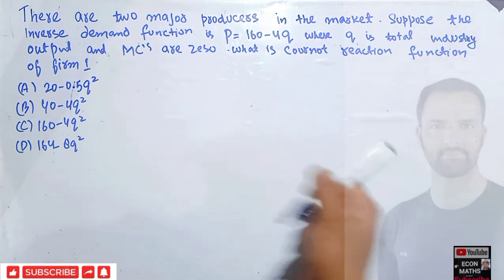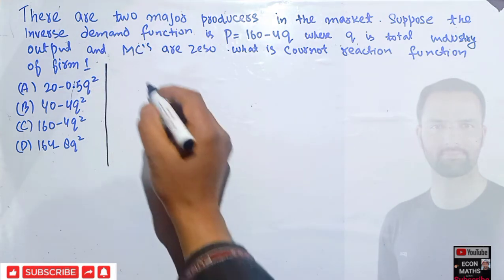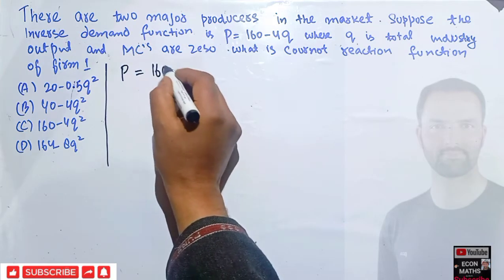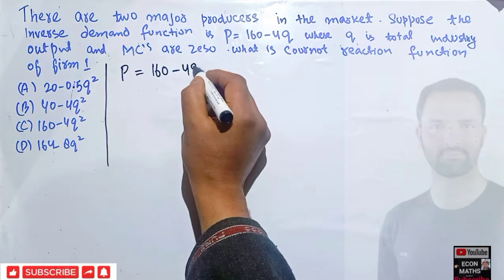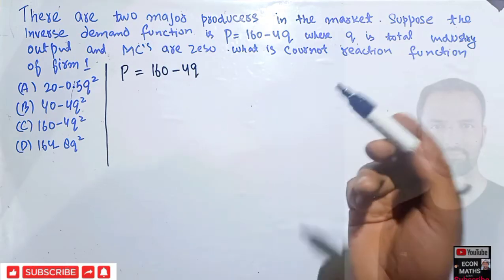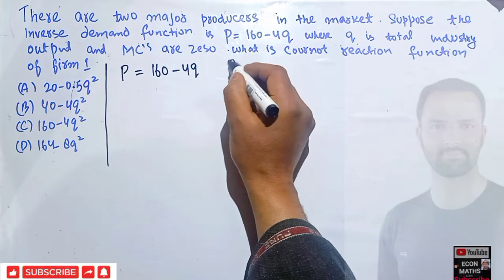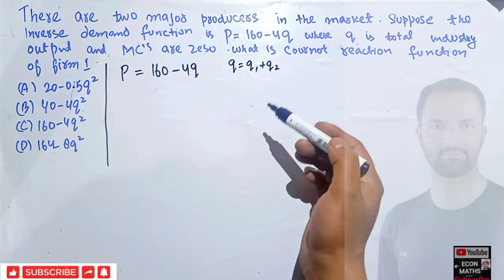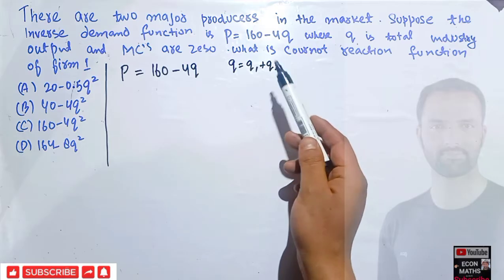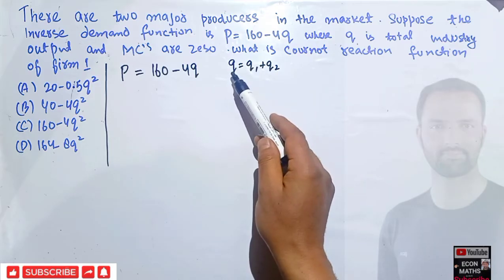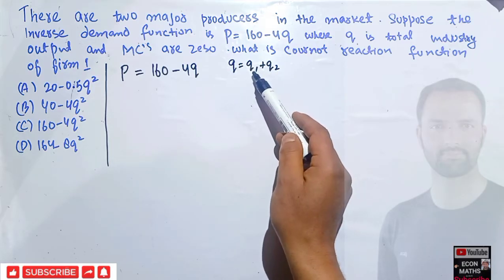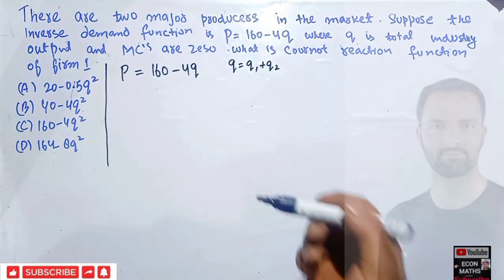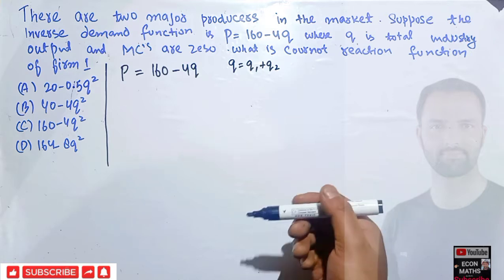So what we are being given here — let me write it: the industry demand is given by P = 160 − 4Q. Since there are only two firms, Q = q1 + q2, meaning total output produced by the two firms equals Q. Output produced by Firm 1 is q1 and by Firm 2 is q2.